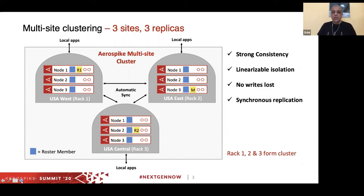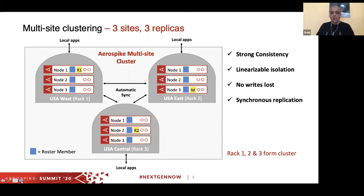There are three racks and all nine nodes form a cluster. There is a definition of the cluster called the roster, which lets every node know what constitutes a full cluster. Local applications can access data in the local rack since, with three sites and three replicas, each rack has a full copy of the database. Local reads can go to the local rack, but all writes are coordinated across all three racks or sites.